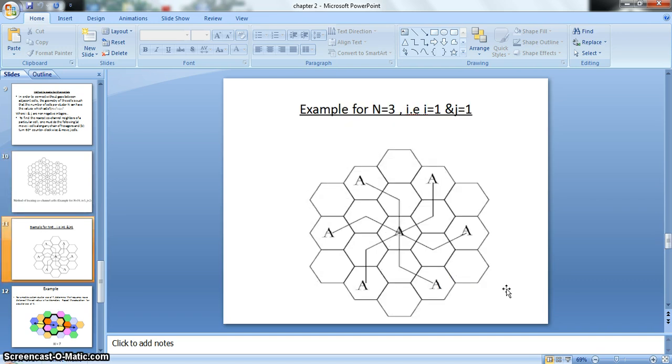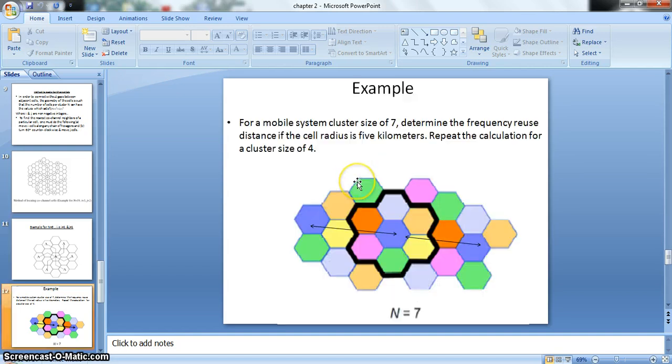Here is another example where if I take i equals 1 and j equals 1, the cluster size will be 3. To find the co-channel cells, I have to move i cells. So suppose in this direction, i cells, turn counter-clockwise, and move j cells, that is 1. So I will find it.